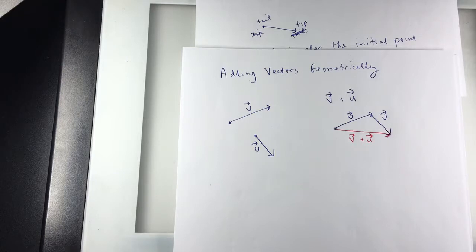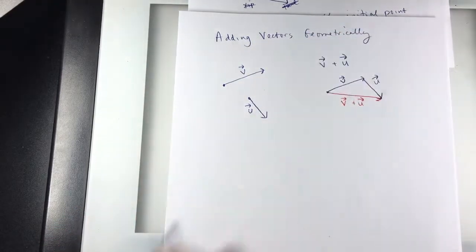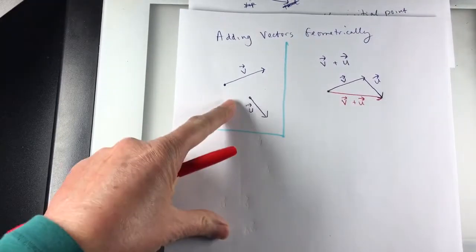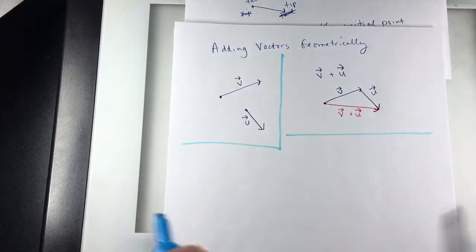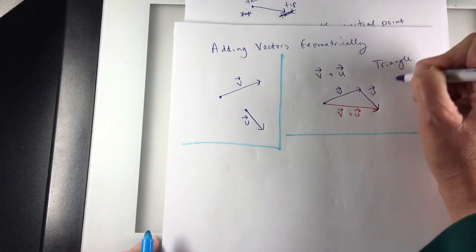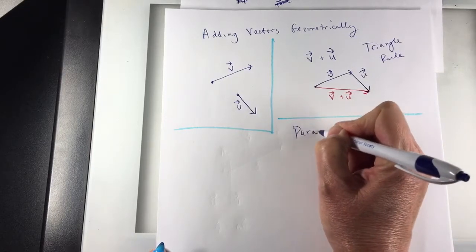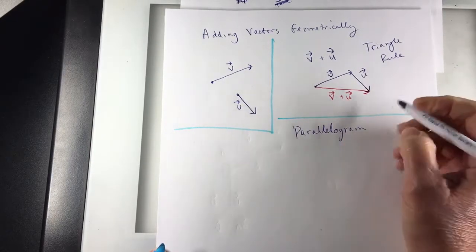I could also add vectors by doing what's called the parallelogram rule. Let me write up here. In fact, let me kind of split this paper up a little bit. Here's the two vectors I was using to work the problem. Here's my addition using the triangle rule. Here's the addition using the parallelogram rule.